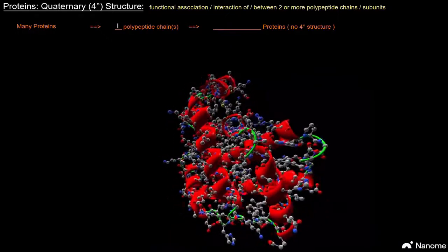Quaternary structure refers to the functional association or interaction of or between two or more polypeptide chains or subunits. Now many proteins only have one polypeptide chain.